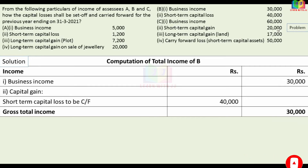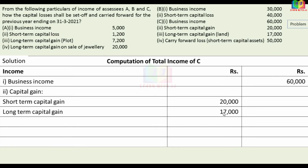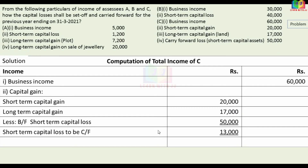For Assessee C, business income is 60,000, short-term capital gain is 20,000, long-term capital gain is 17,000, and there is a carry-forward short-term capital asset loss of 50,000. We adjust the carry-forward loss against total capital gain: 20,000 plus 17,000 equals 37,000. The loss of 50,000 is set off to the extent of 37,000, and the remaining balance of 13,000 is carried forward to the next year. The gross total income is 60,000.